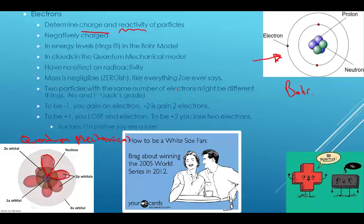Two particles with the same number of electrons might be different things. Protons determines your identity. So neon and F- have the same number of electrons, 10. So F-, hey, that's Jack's grade. I thought everybody started with an A. Not everybody.